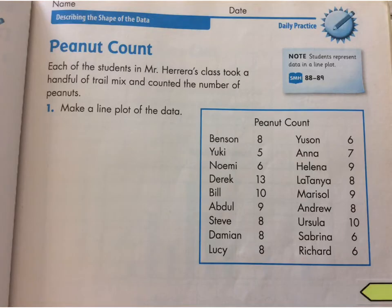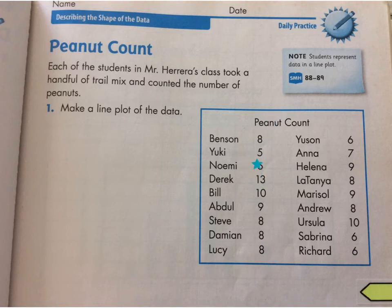Here you can see a list of their data. You don't need to start your line at zero always — you can see what the minimum is just by looking here. It looks like the minimum is going to be 5 and the maximum is going to be 13. So I just need a line that goes from 5 to 13.